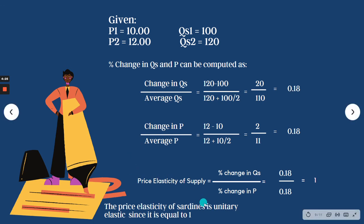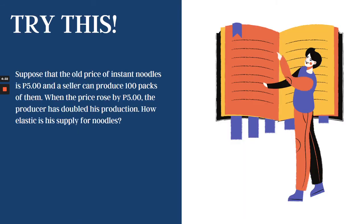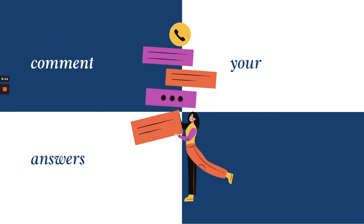I hope that is clear. Now here is something for you to practice: suppose the old price of instant noodles is 5 pesos and a seller can produce 100 packs. When the price rose by 5 pesos — meaning it doubled from 5 to 10 — the producer also doubled his production from 100 to 200 packs. How elastic is his supply for noodles? Comment your answers and let me know. Good luck!